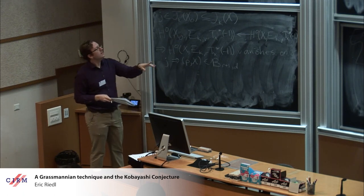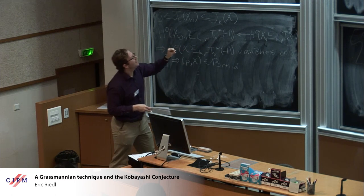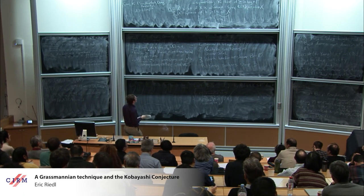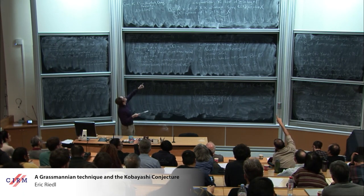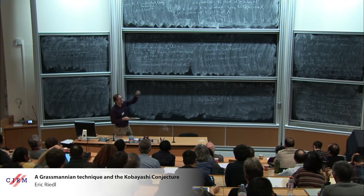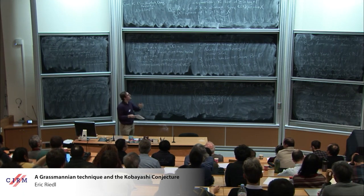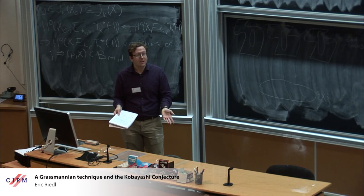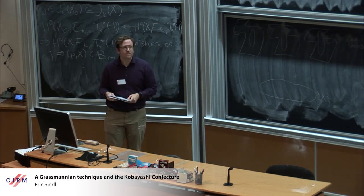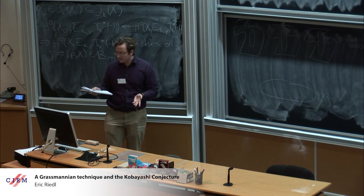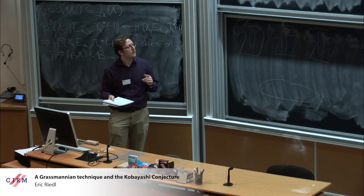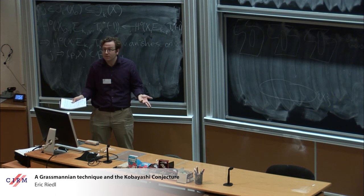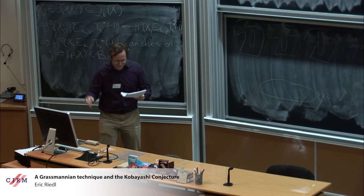That's the proof that Green-Griffiths-Lang implies Kobayashi — it's way up there on the board. That theorem is just a formal consequence of Theorem Star. You can see that Theorem Star is stated in very general terms, so if you're trying to work with some other bad property and want to show a very general hypersurface doesn't have it, you could try and use it. The proof is short and fairly easy because I don't have any complicated machinery — so it has to be simple.